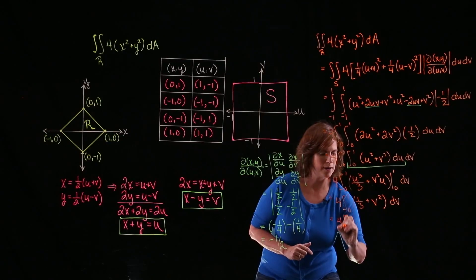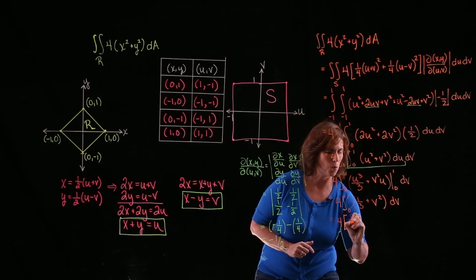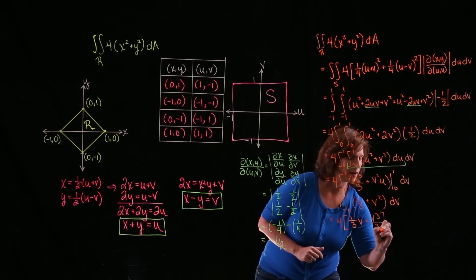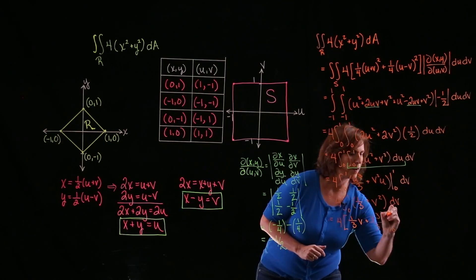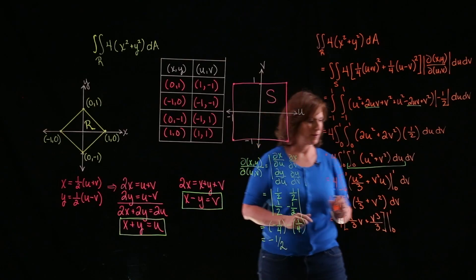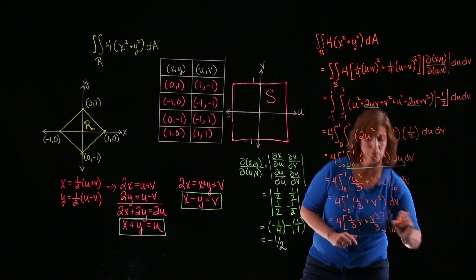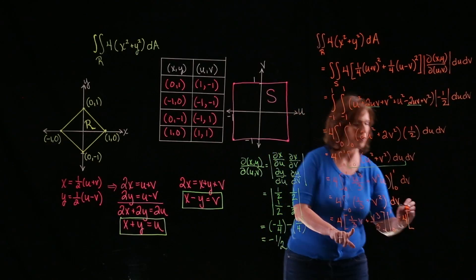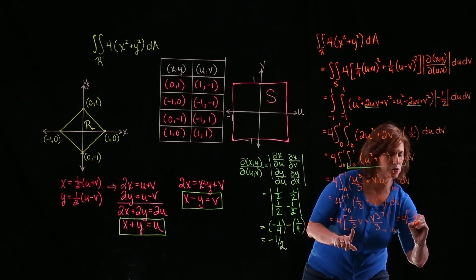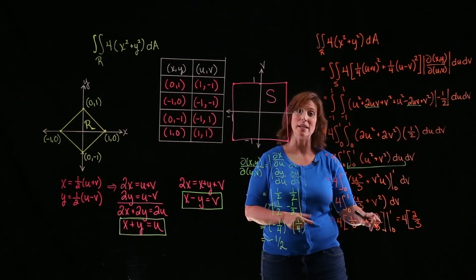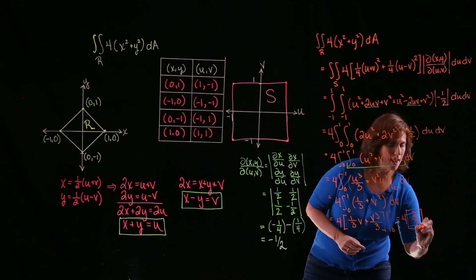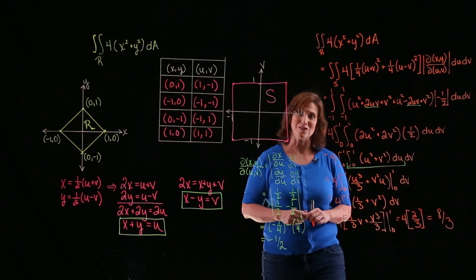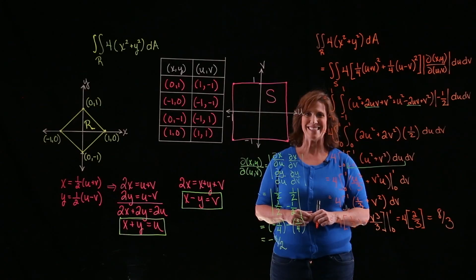Now integrating with respect to v: 4 times [v/3 + v³/3] evaluated from 0 to 1. Plugging in 1 gives one-third plus one-third, which is two-thirds. Subtracting the value at 0, which is zero, gives 4 times two-thirds, and the final result is 8/3. I hope that was helpful. Thanks.